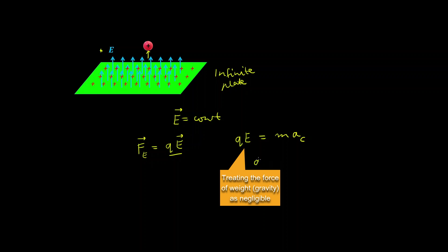We can work out the acceleration is equal to QE over m. Because the electric field is constant and consequently the acceleration is constant, we can use the kinematic equations for constant acceleration motion.